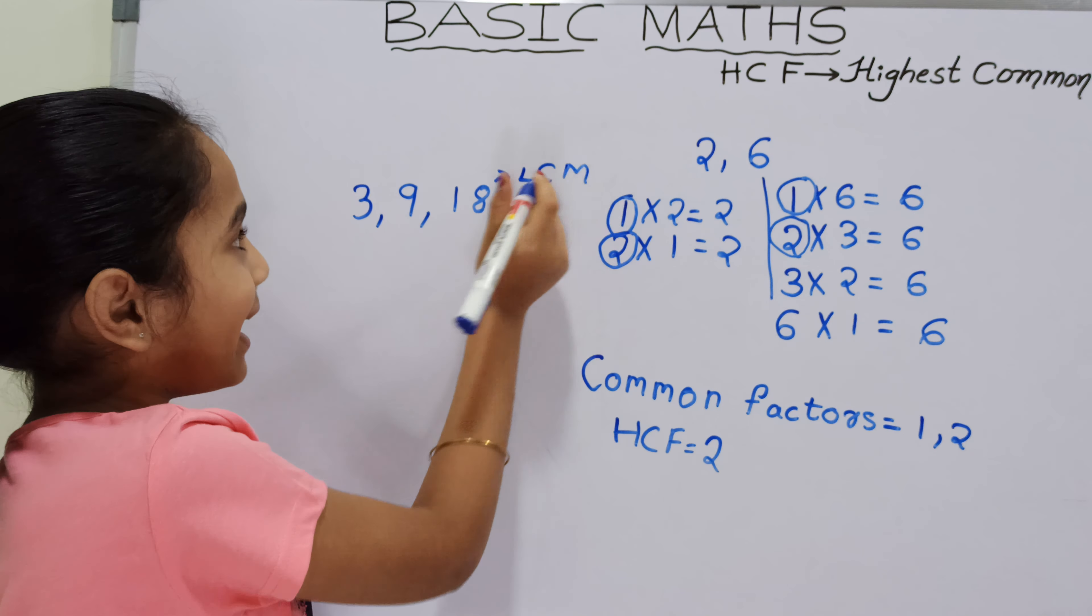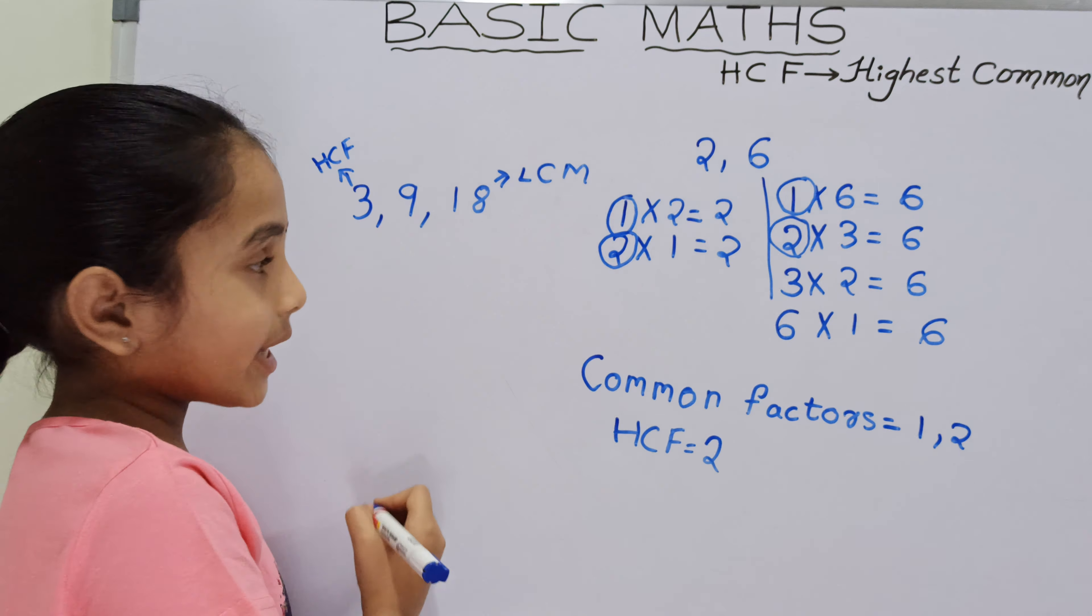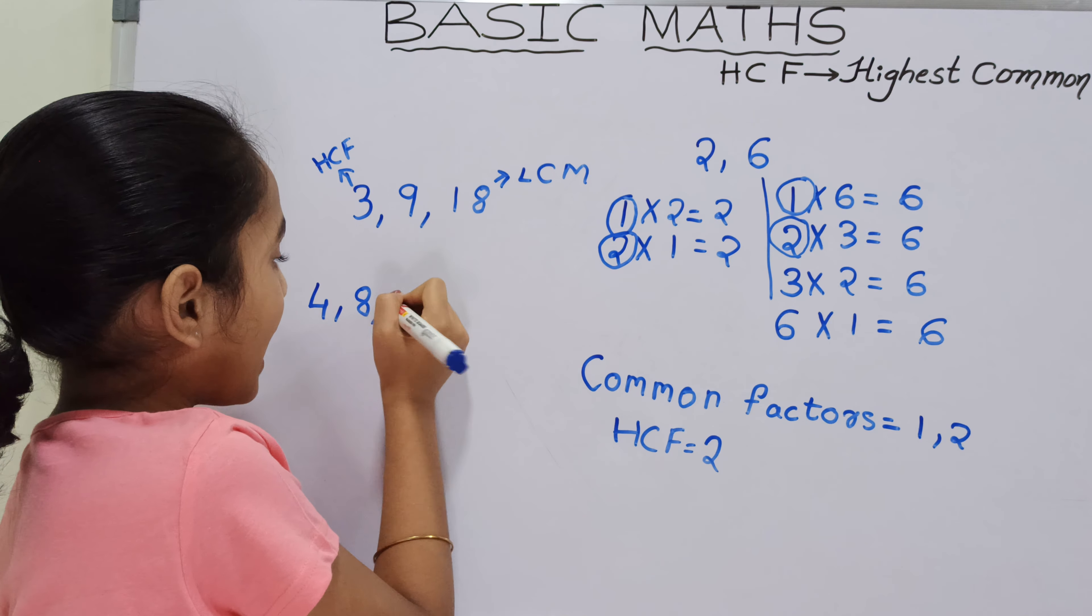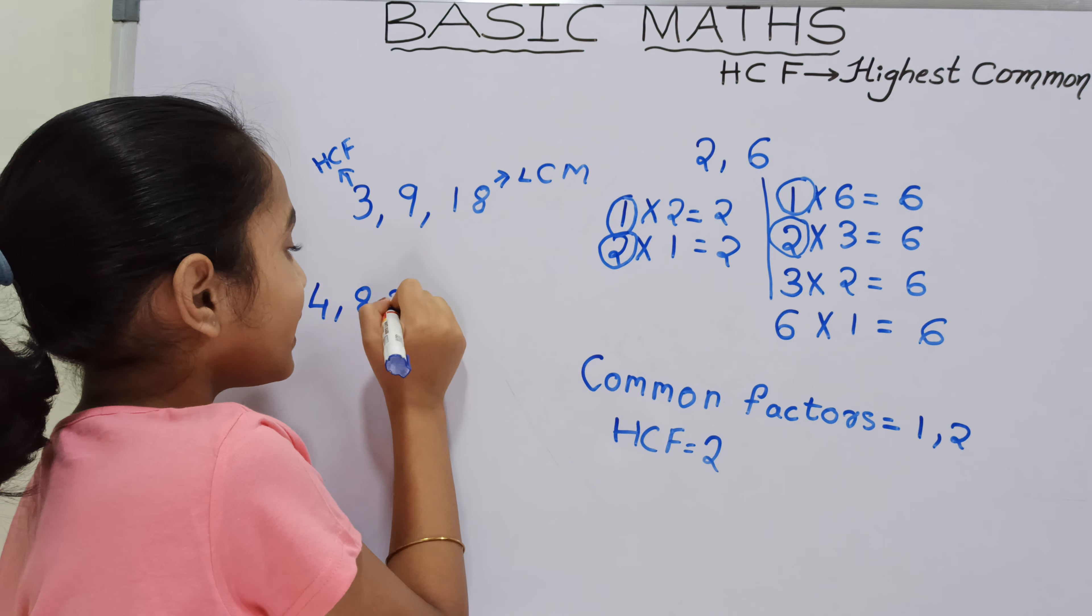Like this, we will take another example of 4, 8 and 24. Now 24 will be the LCM and 4 will be the HCF.